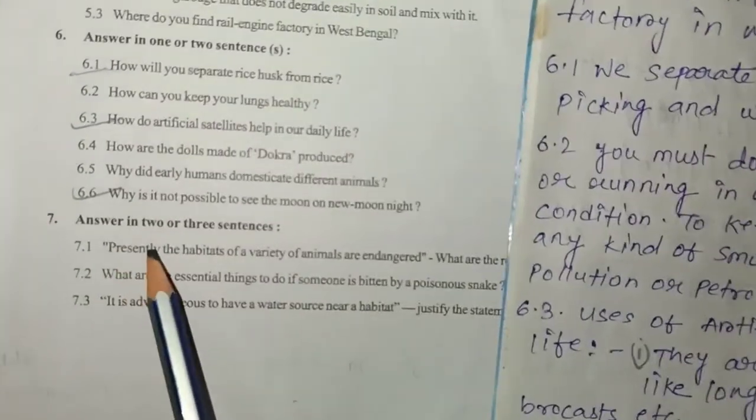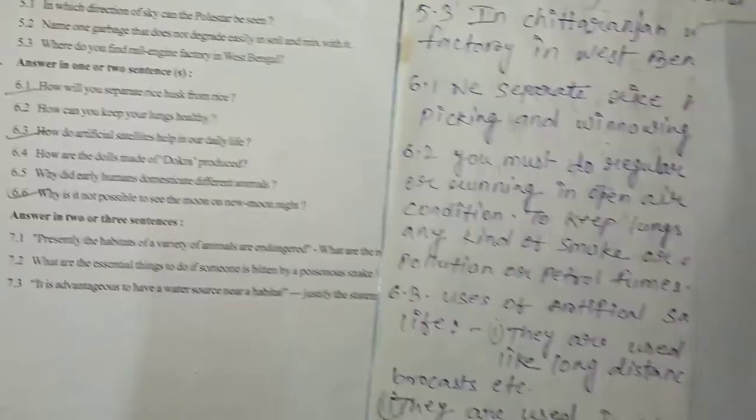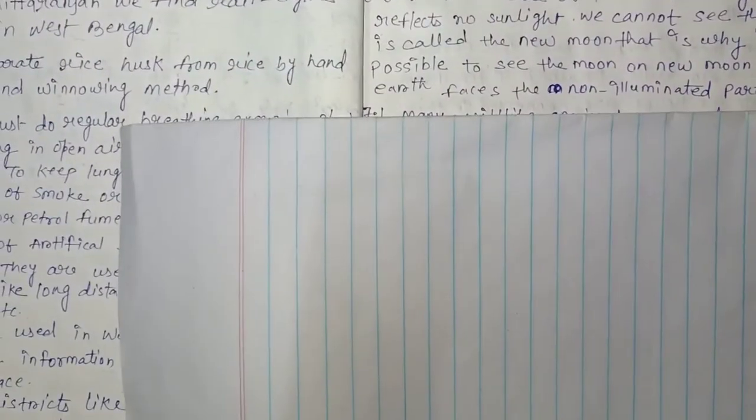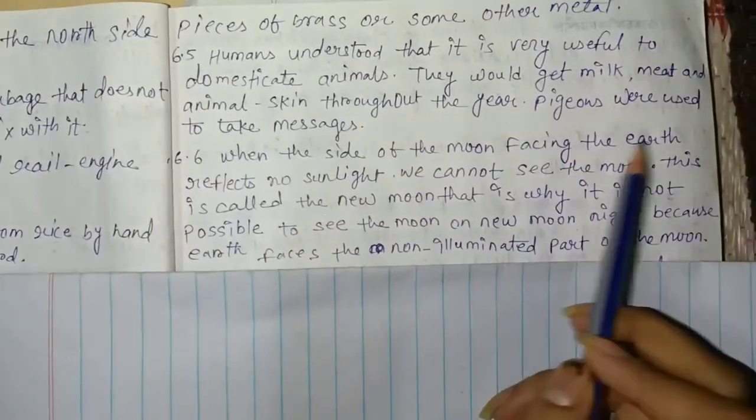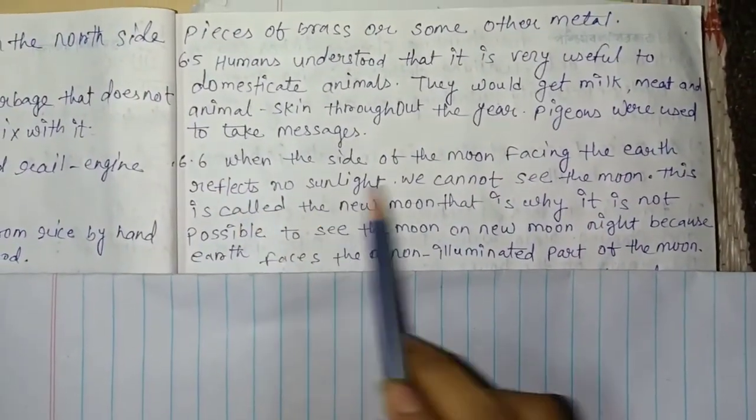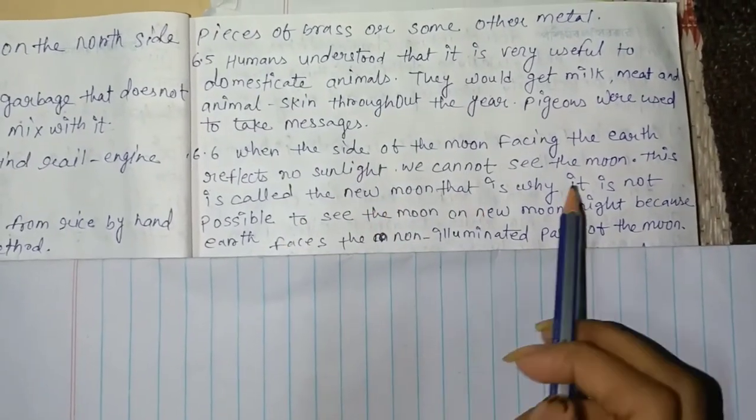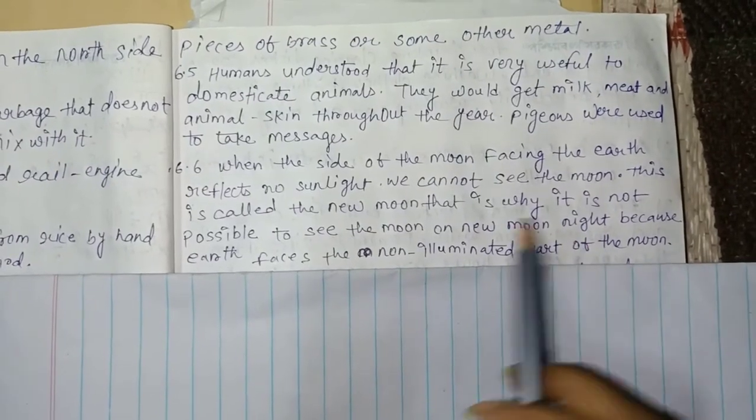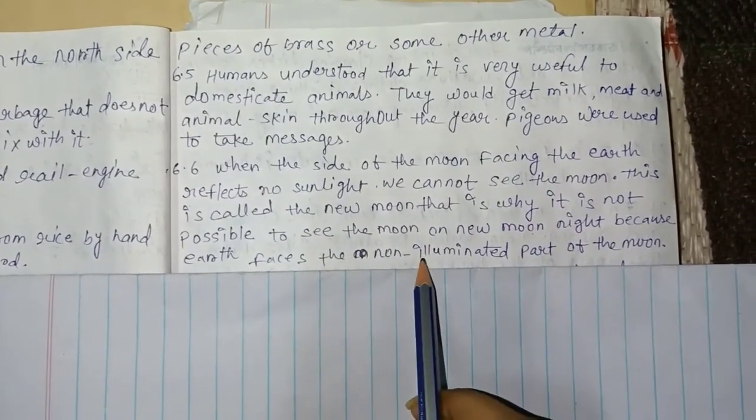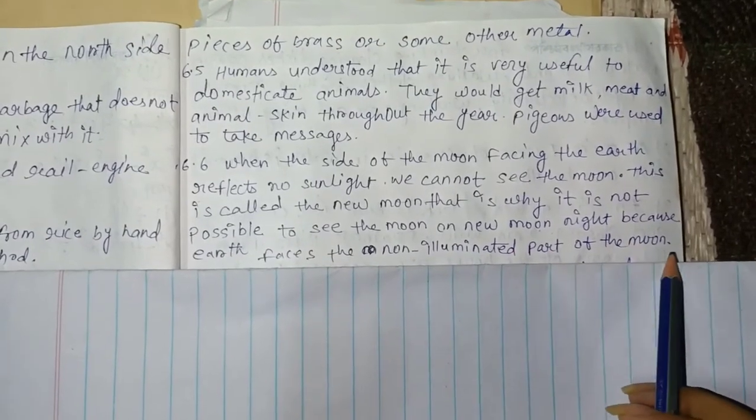6.6: Why is it not possible to see the moon on new moon night? When the side of the moon facing the earth reflects no sunlight, we cannot see the moon. This is called the new moon. That is why it is not possible to see the moon on new moon night, because earth faces the sun-illuminated part of the moon.